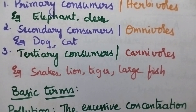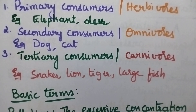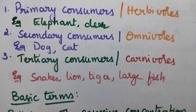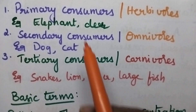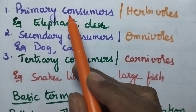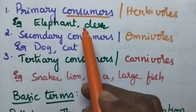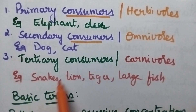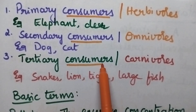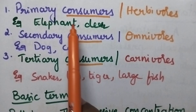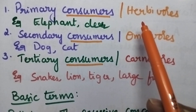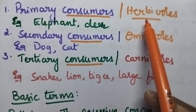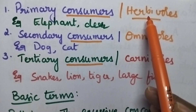Coming to the consumers, they can be classified into three categories: primary consumers, secondary consumers, and tertiary consumers. Primary consumers include herbivores — simply called plant eaters. They include elephant, deer, rabbit, etc.